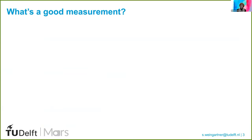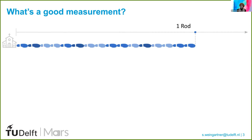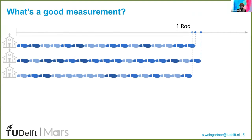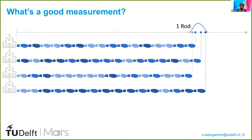Before talking about how to measure the quality of our measurements, I want to start with a small story about what's a good measurement. In 16th century Europe, it was proposed to measure a length by taking the first 16 people that step out of the church, aligning their left foot, and taking the combined length of these 16 feet and defining it as a unit of measurement.